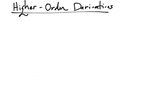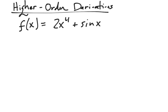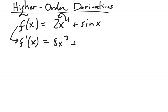Let's talk briefly about higher order derivatives. So far we've only been taking the first derivative, but there are higher ones — second, third, fourth, up to the 800th derivative if you want. We'll focus on the first, second, and third generally. For example, with 2x to the fourth plus sine x, the first derivative f prime uses the power rule: bring down the 4, giving 8x cubed, and the derivative of sine is just cosine x. The derivative represents the slope of the previous function.